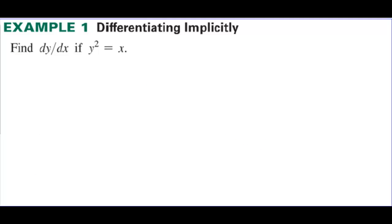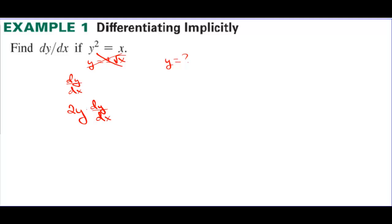Find dy/dx if y² = x. We could get y by itself as plus or minus the square root of x, but how do we deal with plus or minus? We don't — instead we take the derivative implicitly. Since y is some function of x, every time we take the derivative of y we write the derivative of the inside function. Taking d/dx of y² gives 2y times dy/dx — the 2y is the derivative of the outside, and dy/dx represents the chain rule for the inside — and that equals 1.